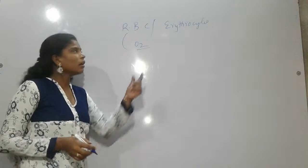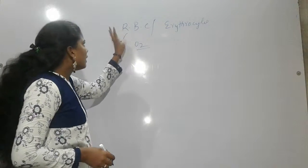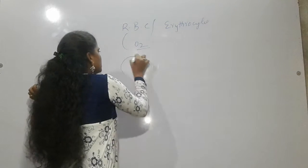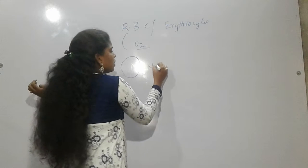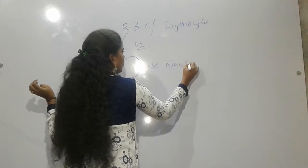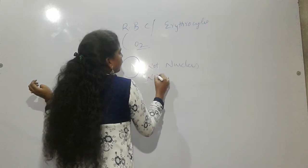Because by nature, by the structure of RBC is not having nucleus and it is not having mitochondria.